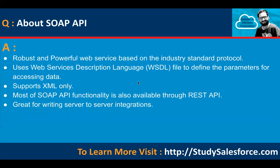Next is SOAP API. It is a robust and powerful web service based on the industry standard protocol. It uses a WSDL file to define the parameters for accessing data. It supports XML only. Most of SOAP API functionality is also available through REST API. It is great for writing server-to-server integrations.